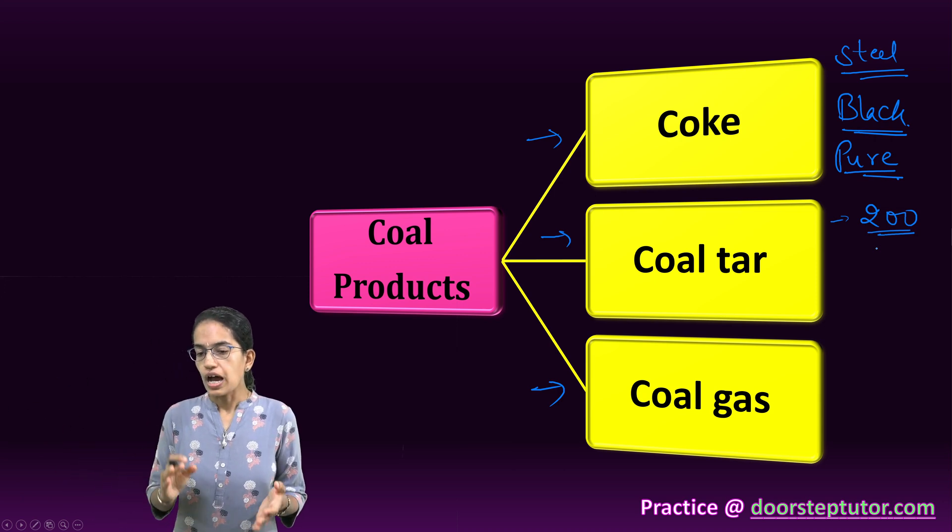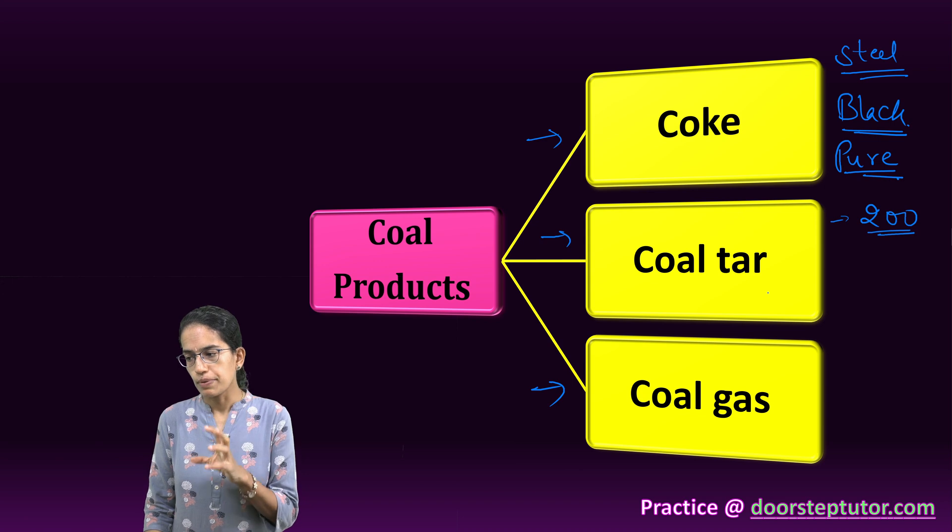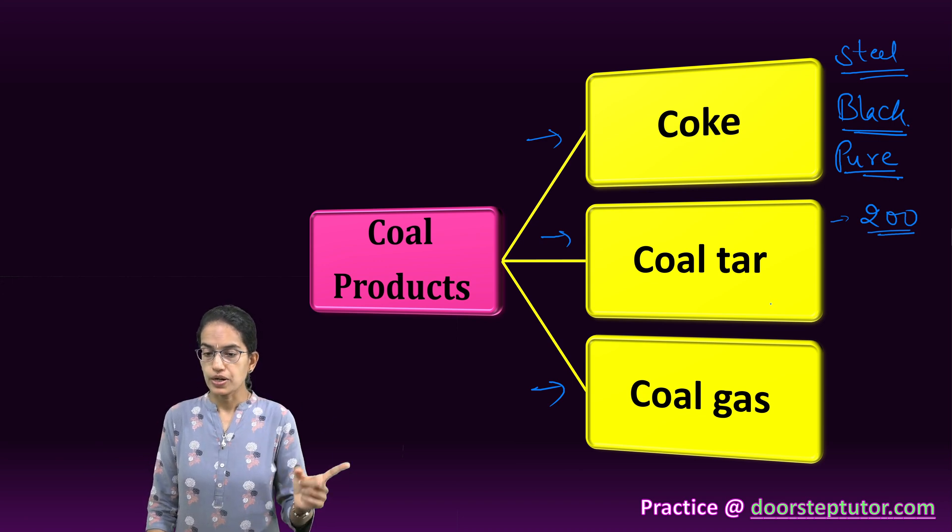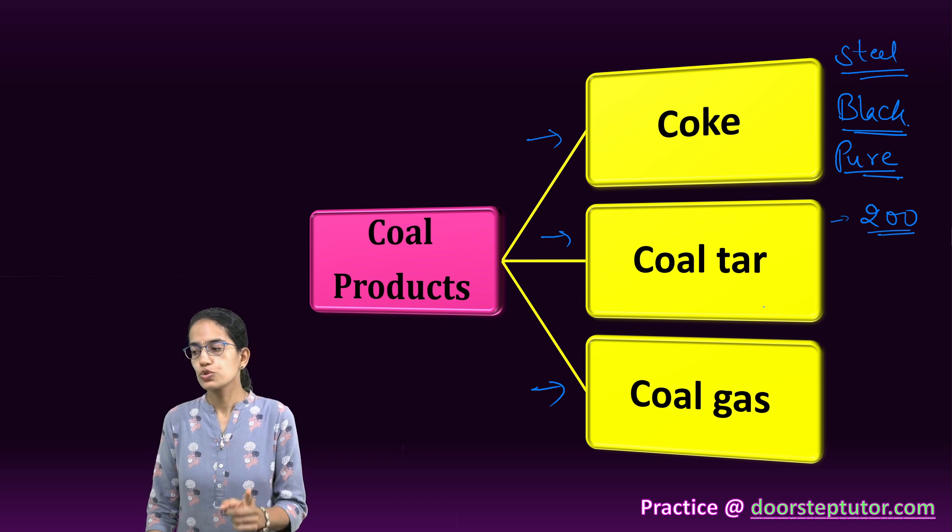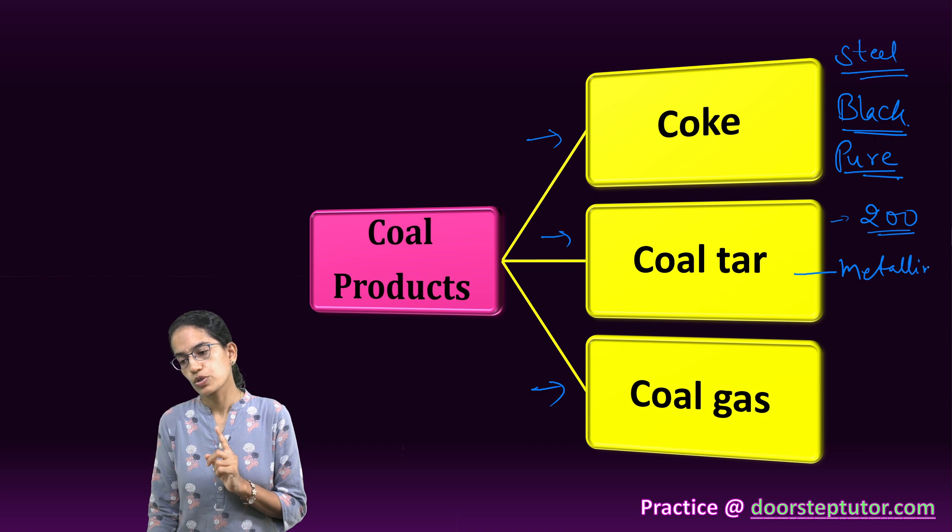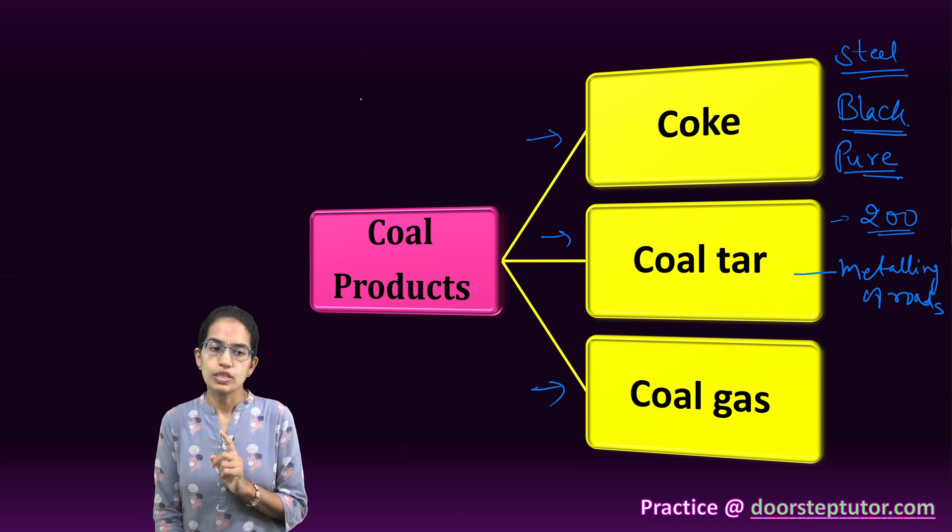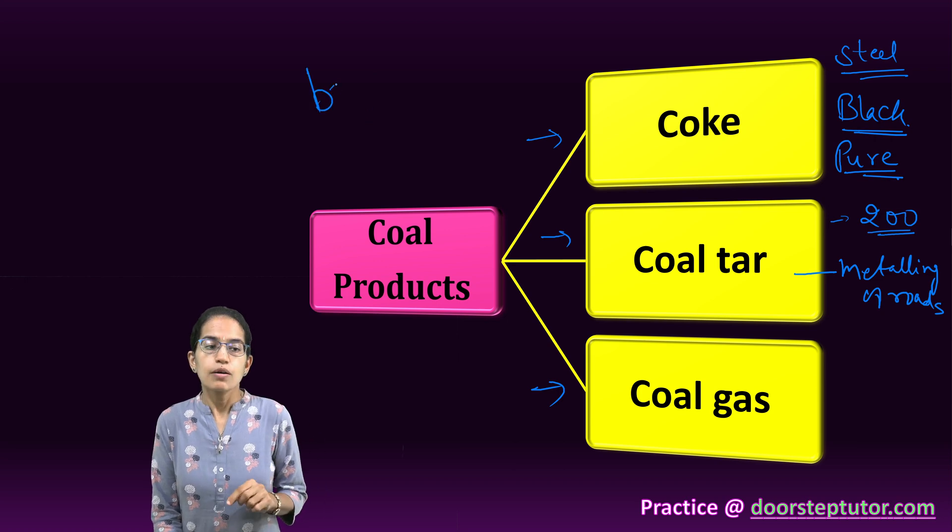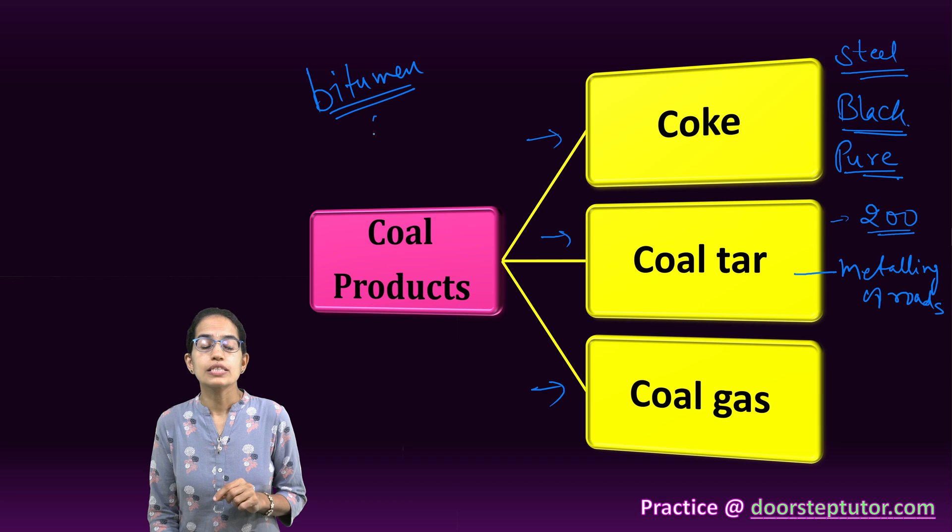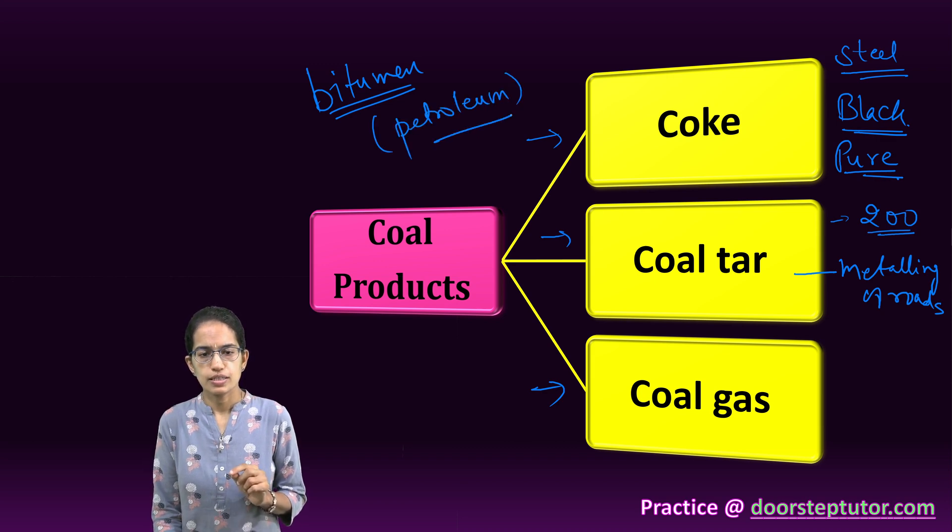From coal tar, various things are prepared. For example, explosives, lubricants, oil, paints, plastics, roofing material, and photographic material are some of those. Also, nowadays, bitumen, which is a petroleum product rather than coal tar which is a coal product, is used for metaling the road. Previously, coal tar was used in huge amounts for metaling roads. Now, rather than coal tar which is a coal product, bitumen is used, and this bitumen is a petroleum product.